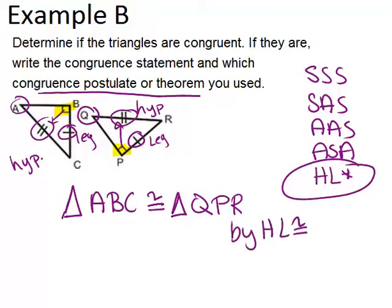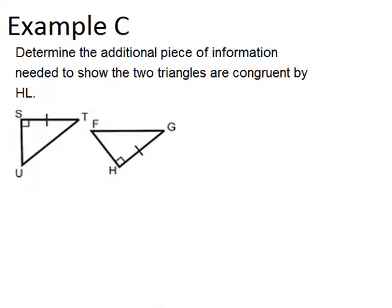Finally, let's look at example C. Determine the additional piece of information needed to show the two triangles are congruent by HL. This is similar to example A.